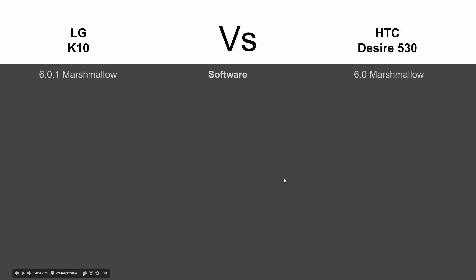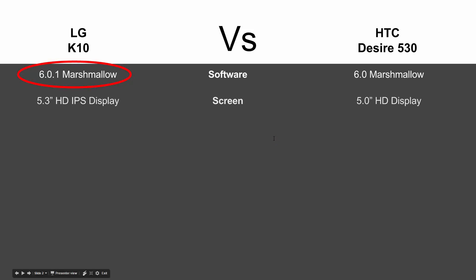Starting out with software, the K10 does come with a newer version of Android, 6.0.1, so it does give it a little bit of an edge there. In terms of display, the K10 does have a larger display as well — 5.3 inch versus the 5 inch on the Desire.